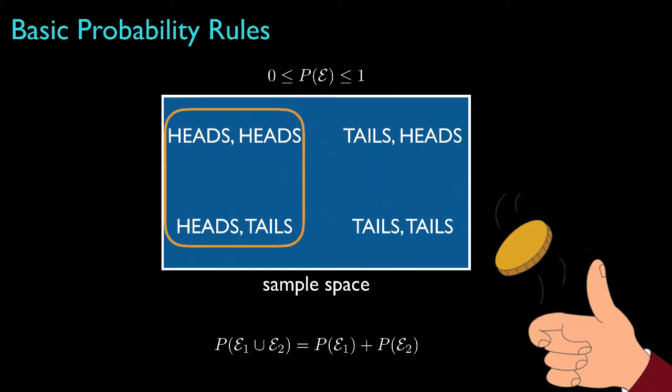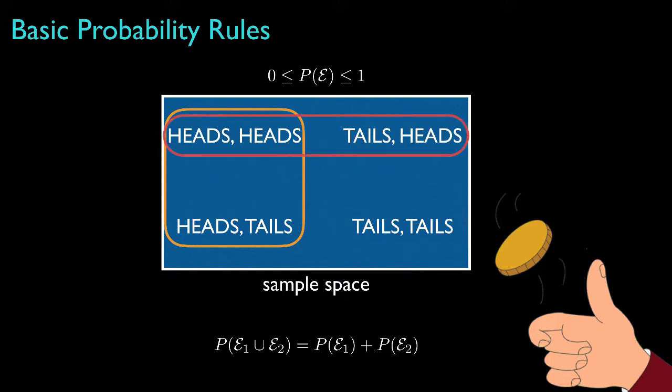For example, if our first event is heads on the first toss, that would include the two outcomes heads-heads and heads-tails. And if the second event is tails on both tosses, which would only include one outcome — tails and tails — then the probability that event 1 union event 2 happens is the sum of those two probabilities. If, however, event 2 is heads on the second toss, which would include the outcomes heads-heads and tails-heads, then we couldn't add the two probabilities to get the probability for the union, because these two events are not disjoint — they share an outcome in their intersection.